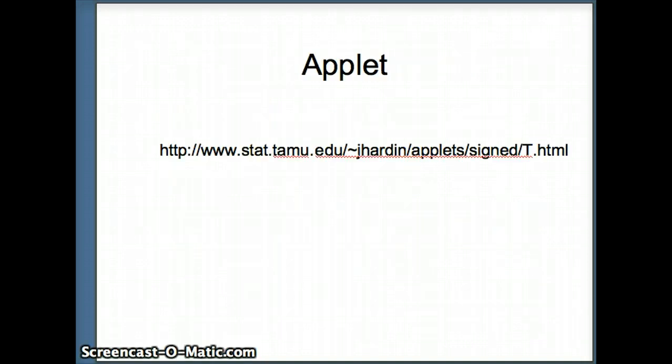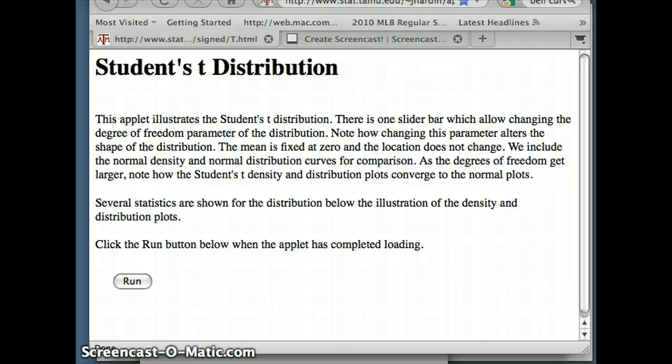So we have an applet that will help us see this, and the URL is up there. So we'll take a quick look at that applet, and we'll see how the t tends to the z. So here's our applet. You'll notice it talks about the student t-distribution, saying the mean is fixed at zero, so the mean for the t is always zero. And it's going to give us a picture of the normal graph, the z, together with the various t's. And this author says, as the degrees of freedom get larger, notice how student t's density and distribution plots converge to the normal plots, i.e. the t gets closer and closer to the z.